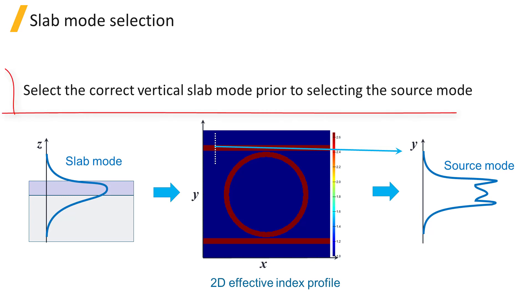It's important to make sure that the correct vertical slab mode is selected in the effective index tab of the solver region prior to selecting the source mode. The slab mode is required to determine the effective material properties at each point in the simulation.